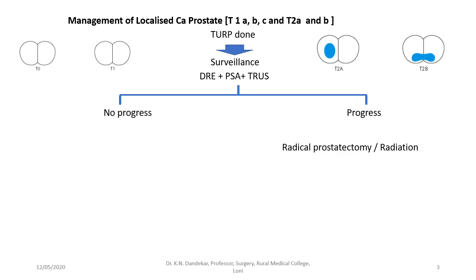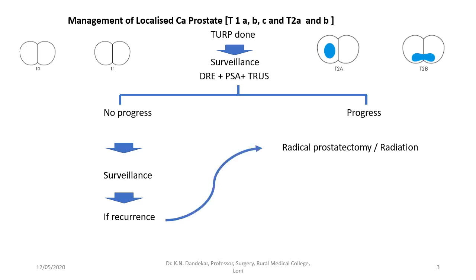If you notice progress — that is recurrence in the form of appearance of a lesion on DRE, TRUS, or rise in the level of PSA — then consider this patient for radical prostatectomy or radiation. If there is no progress, that is DRE and TRUS are normal and PSA levels within normal limits, continue the surveillance with DRE, TRUS and PSA estimation. The conservative treatment continues as long as these parameters remain normal.